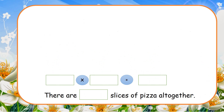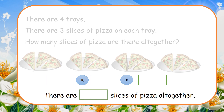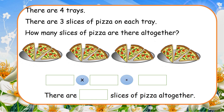There are four trays. There are three slices of pizza on each tray. How many slices of pizza are there all together? Four times three equal twelve. There are twelve slices of pizza all together.